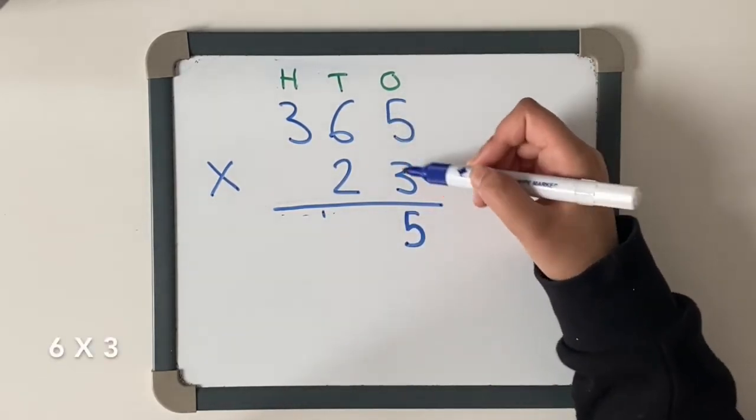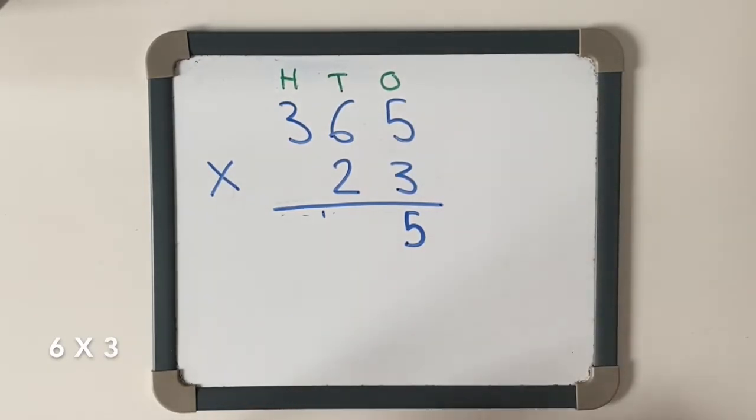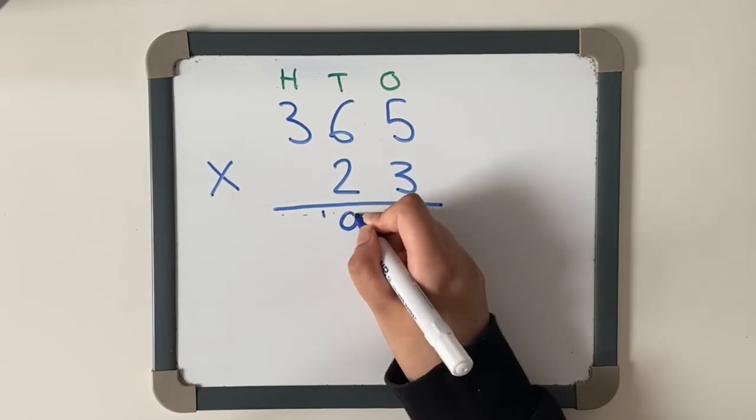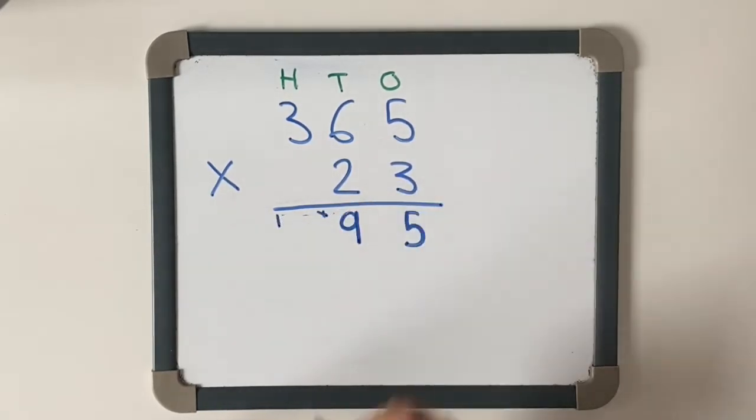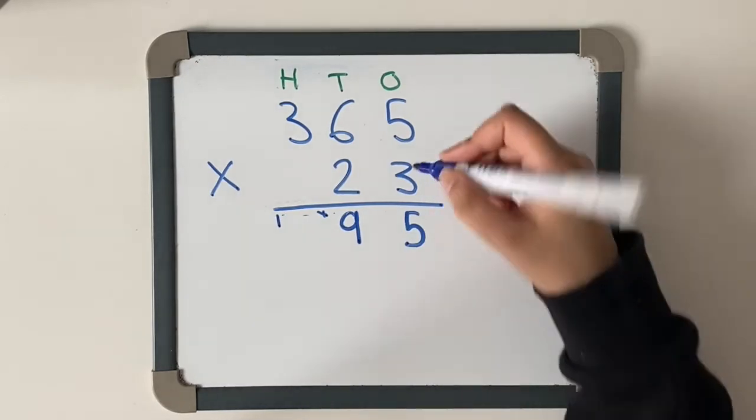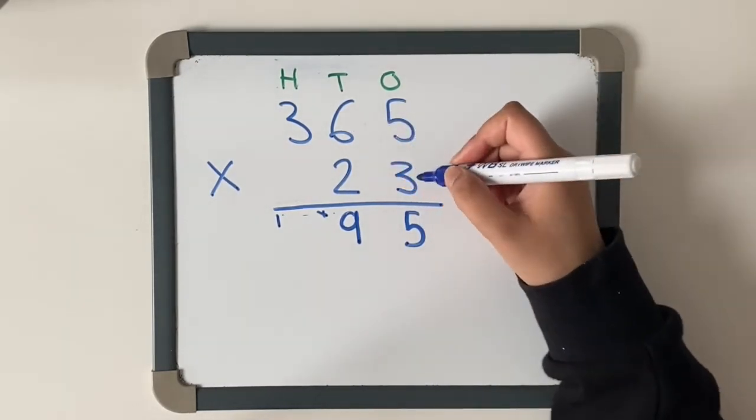Then we're going to do six times three - six, twelve, eighteen - add the one which is nineteen. I'm going to put my nine there and carry my one across. So we've done five times three, we've done six times three.